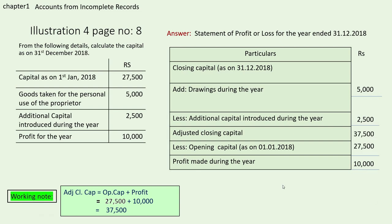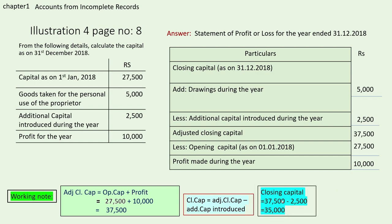Now we find the closing capital using another formula: closing capital equals adjusted closing capital minus additional capital introduced. Adjusted closing capital is 37,500 and additional capital introduced is 2,500. So closing capital equals 37,500 minus 2,500, which gives 35,000. That is your closing capital.